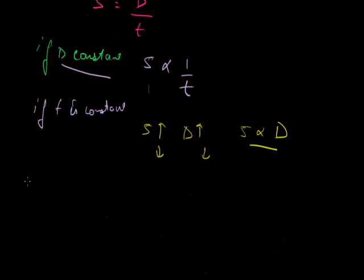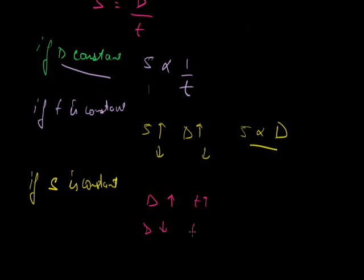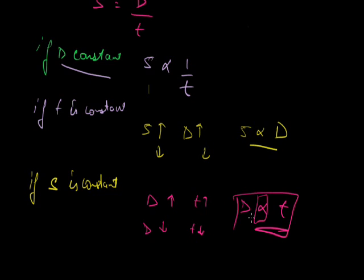Now, if speed is constant, then again if distance is increased, time will increase because speed is constant, and if distance is decreased, time will also decrease because speed is constant. So I can say D is directly proportional to T. So I get three relationships here depending on the parameters.